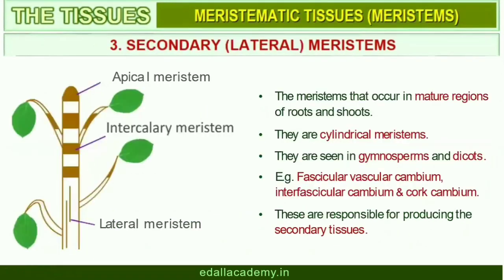The meristem that occurs in the mature regions of roots and shoots of many plants, particularly those that produce woody axis, and appears later than primary meristem, is called the secondary or lateral meristem. They are cylindrical meristems. Fascicular vascular cambium, interfascicular cambium, and cork cambium are examples of lateral meristems. These are responsible for producing secondary tissues.